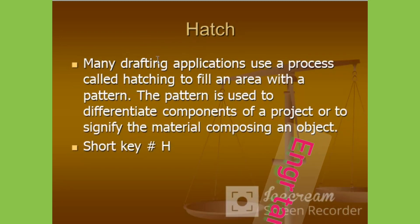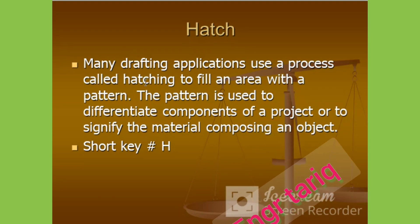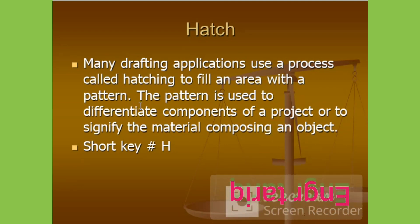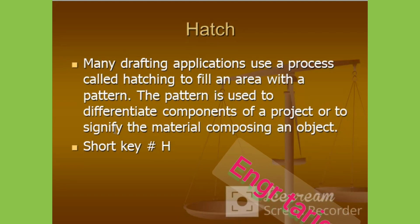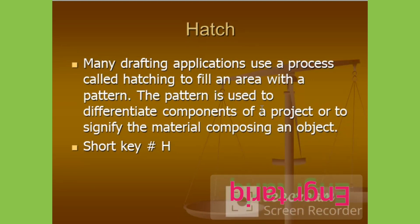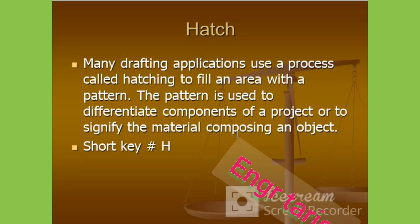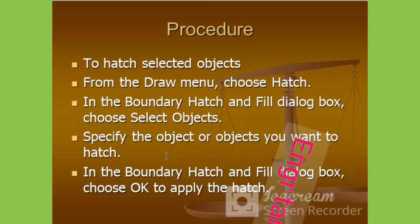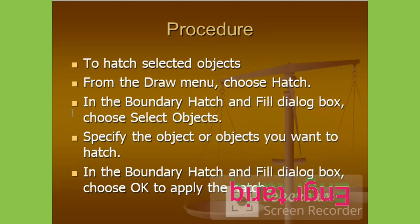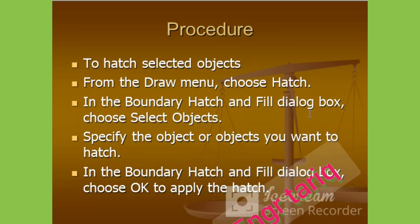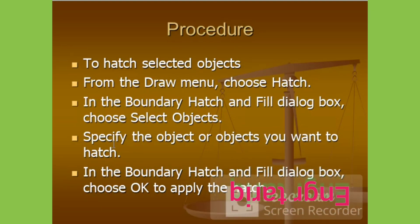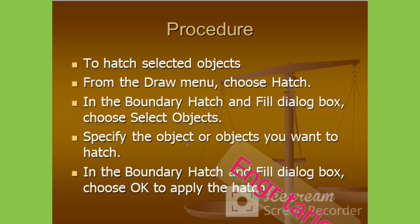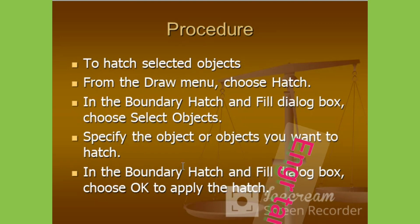H. Many drafting applications use a process called hatching to fill an area with a pattern. The pattern is used to differentiate components of a project or to signify the material composing an object. The shortcut key is H. The procedure to hatch a selected object: from the draw menu choose H, in the boundary hatch and fill dialog box choose select objects, specify the object or objects you want to hatch, then choose okay to apply the hatch.